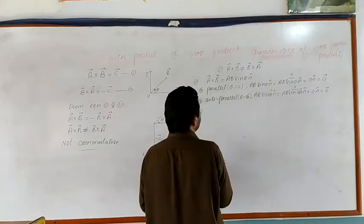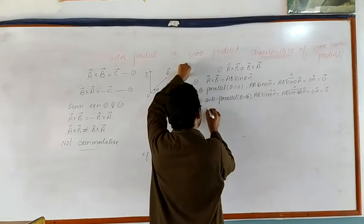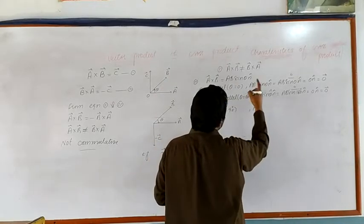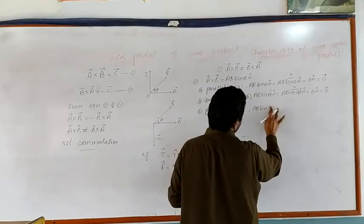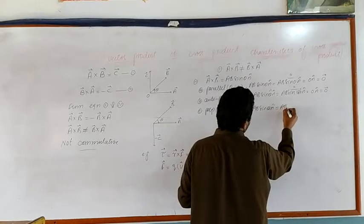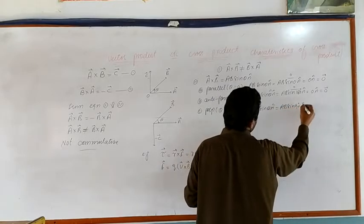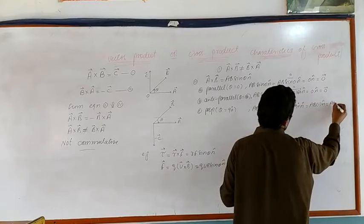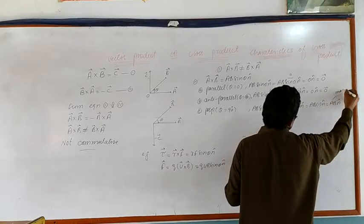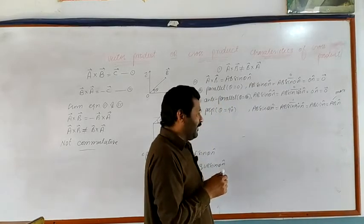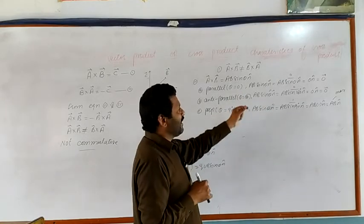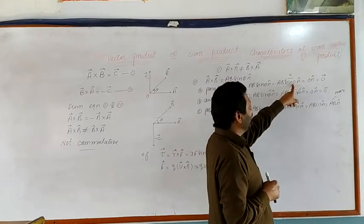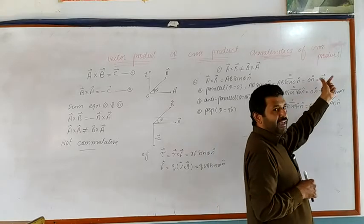When vectors A and B are perpendicular to each other, the angle between them is 90 degrees. Their cross product will be A B sine theta into n-hat, and since theta is 90 degrees, sin(90) equals 1. So the resultant is A B into n-hat, having the maximum value. When the angle between two vectors is 90 degrees, the cross product has maximum value. When two vectors are parallel or anti-parallel (angle 0 or 180 degrees), the resultant has minimum value (zero).